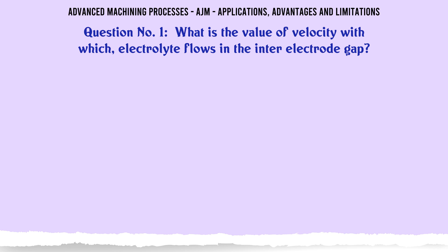What is the value of velocity with which electrolyte flows in the inter-electrode gap? Option A: 1 m/s. Option B: 3 m/s. Option C: 5 m/s. Option D: 10 m/s. The correct answer is 5 m/s.